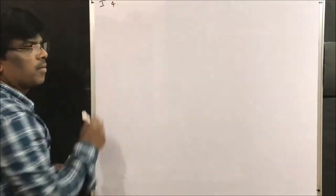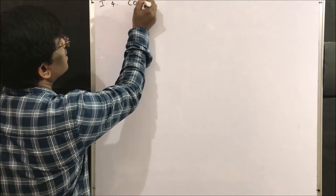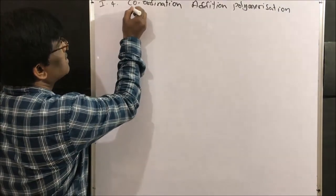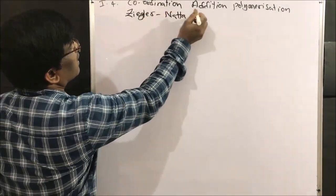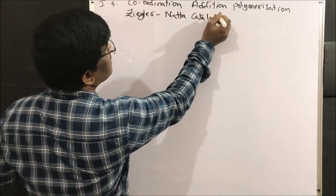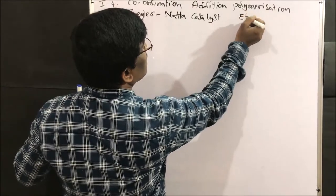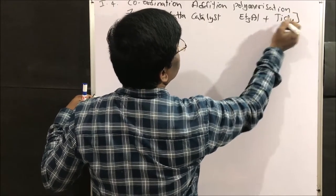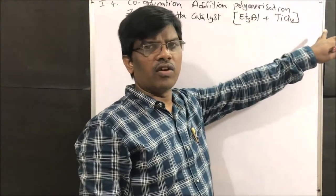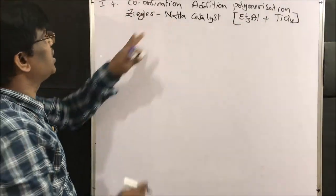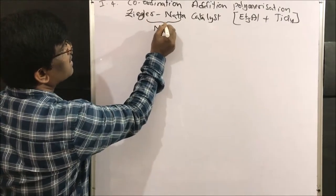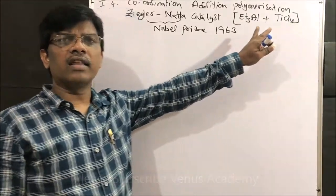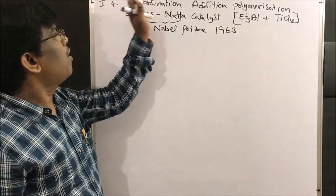Under coordination addition polymerization, the main important aspect is the Ziegler-Natta catalyst. The Ziegler-Natta catalyst is the combination of triethyl aluminum and titanium tetrachloride. This is very important — because of this invention, these two scientists received the Nobel Prize in 1963.